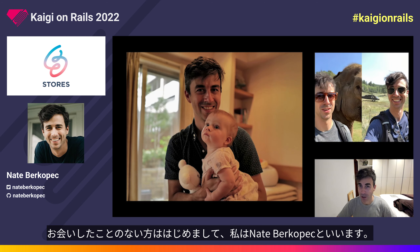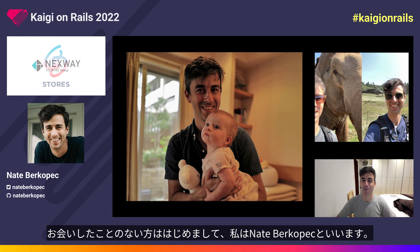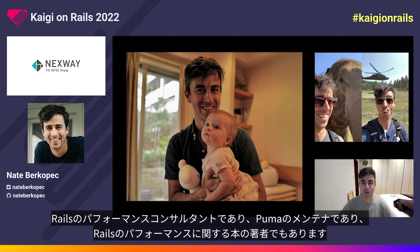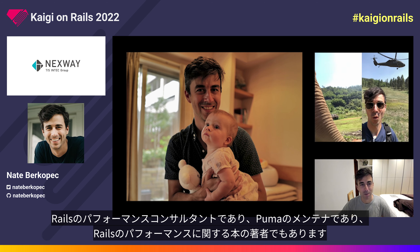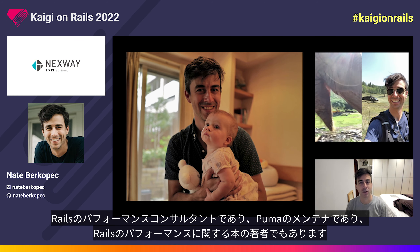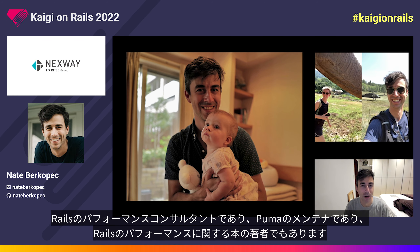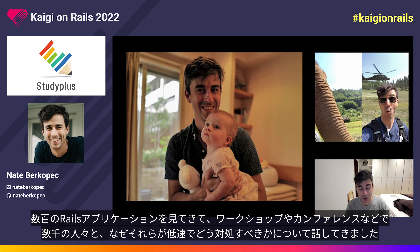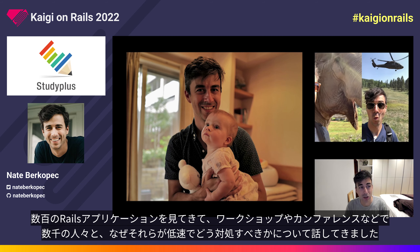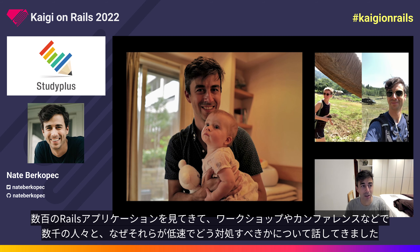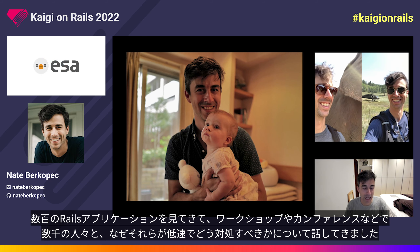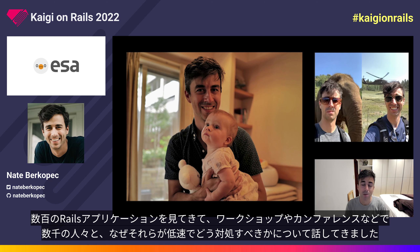If we haven't met yet, hajimemashite. My name is Nate Berkopech and I'm a Ruby on Rails performance consultant. I'm also a maintainer of Puma and the author of several books on Rails performance. I've worked on Rails applications and making them faster for about six years now, and over that time I have seen hundreds of individual Rails applications and thousands of people to talk about why they're slow and what to do about it.